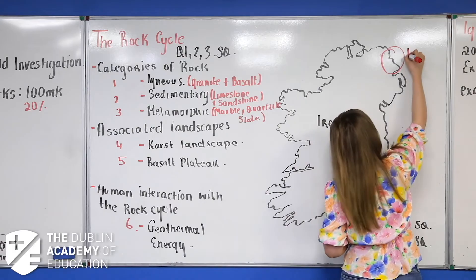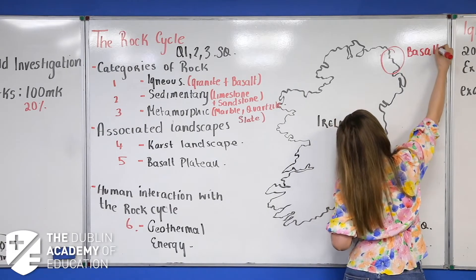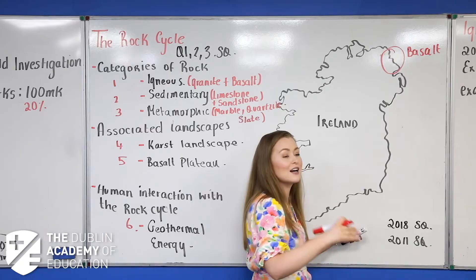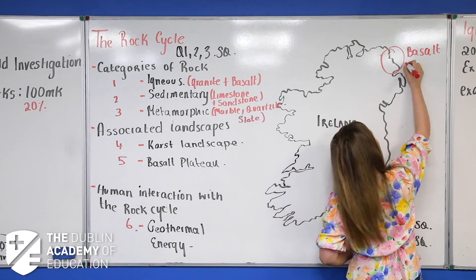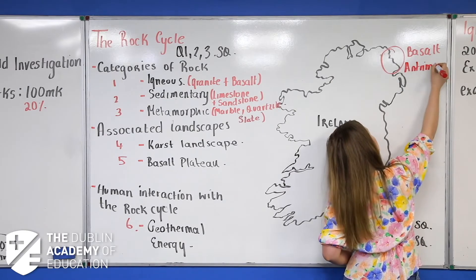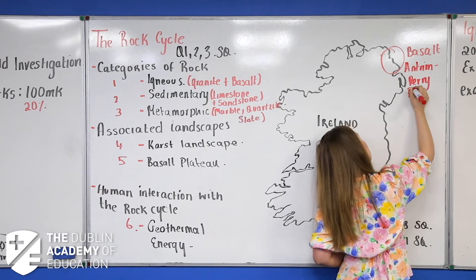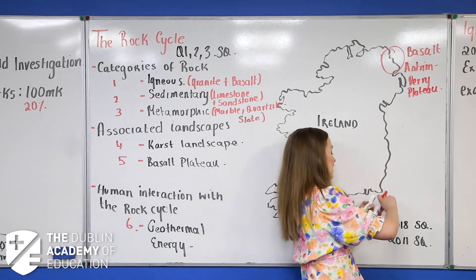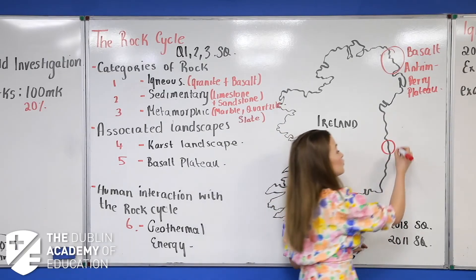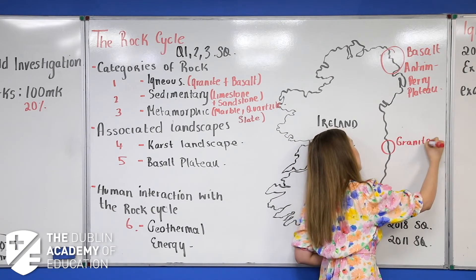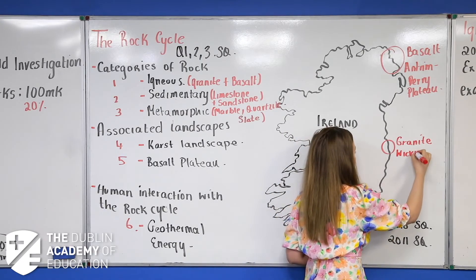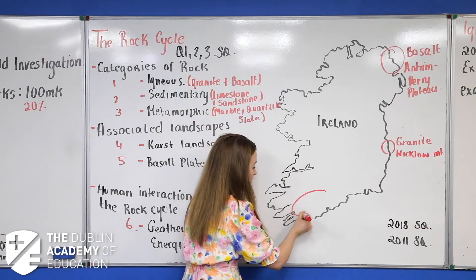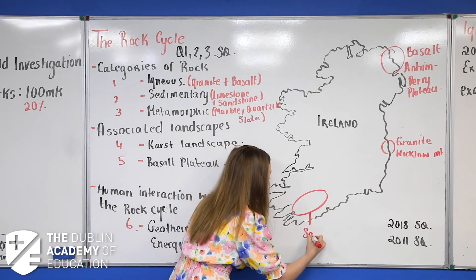Let's start at the top. Up in Northern Ireland we have basalt — circle this and write it in on the map. This area is referred to as the Antrim and Derry Plateaus; sometimes we say the Giant's Causeway but that's just the small column area. Down a bit further, just below the Dublin area, we have granite — that's our two igneous rocks — in the Wicklow Mountains.